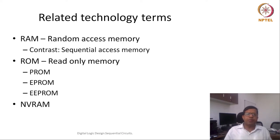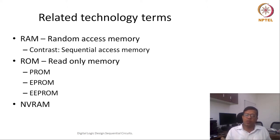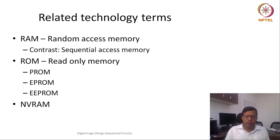In semiconductor memory, there are further terms you will encounter. One popular term is RAM — random access memory. This means your memory has a lot of data, which you can consider as an array of elements. If you can access any element randomly — meaning to access address x, you need not first access address x minus 1 or x plus 1 — then it is a random access memory. Any address can be independently addressed. Random access memory does not mean all locations require the same time to access; it just means any address can be accessed randomly.